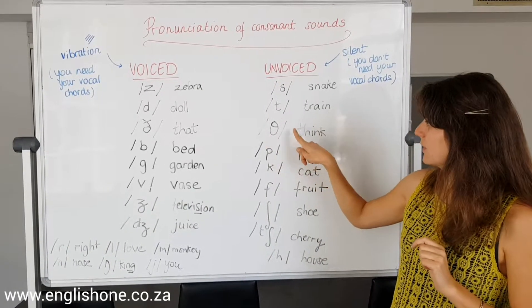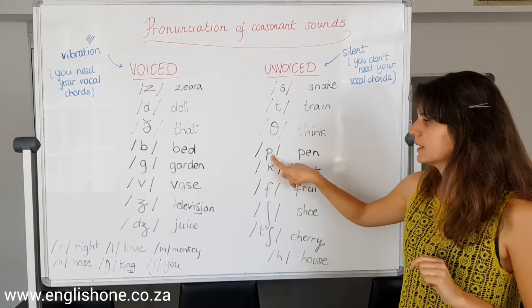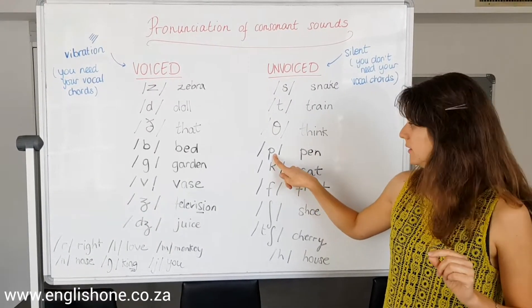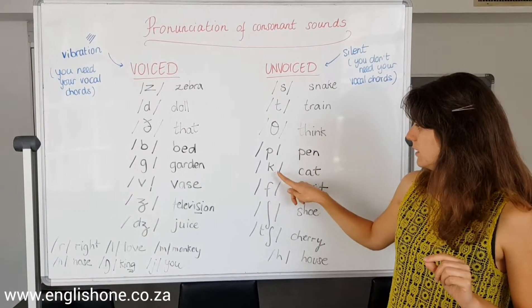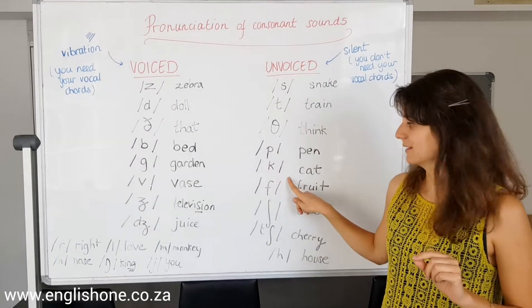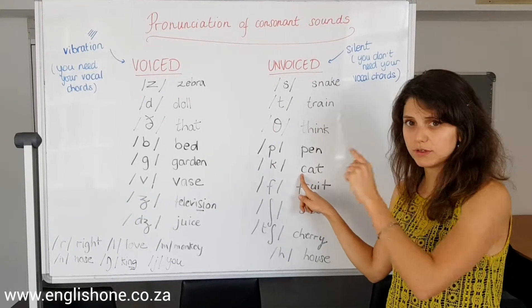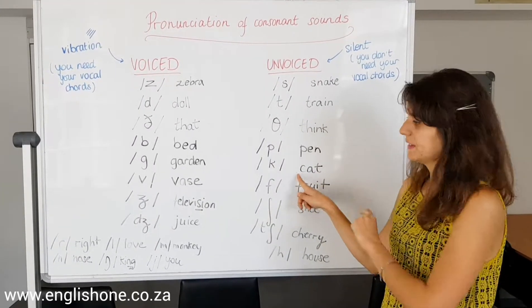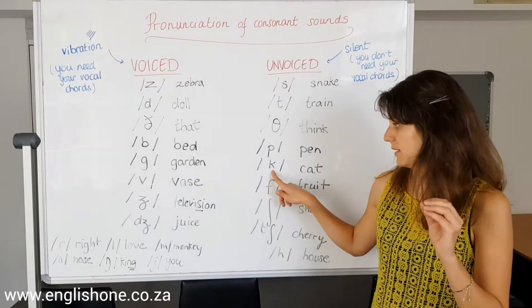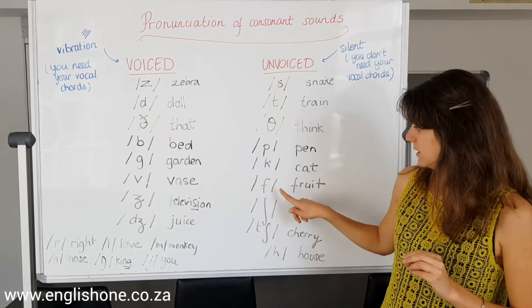This one is P, as in 'pen.' And then K, as in 'cat.' So even a word spelled with C will use the K sound. Like a K — 'cat.'